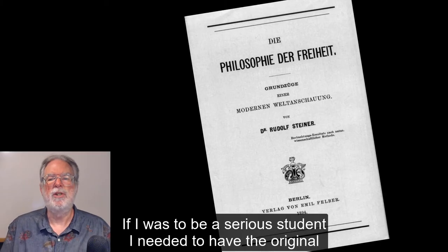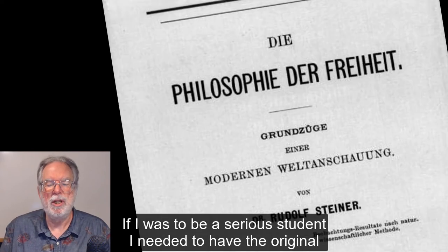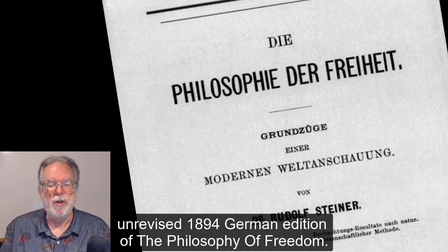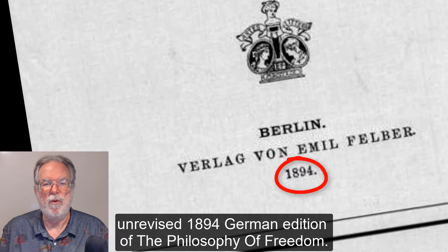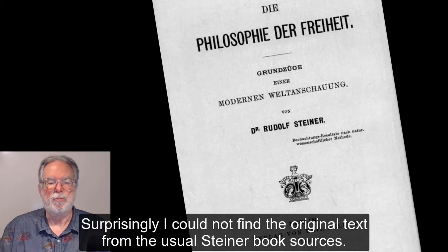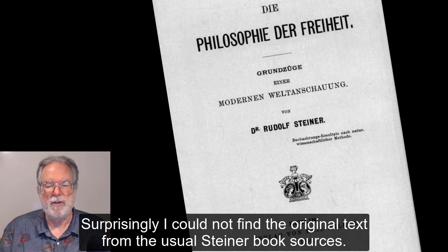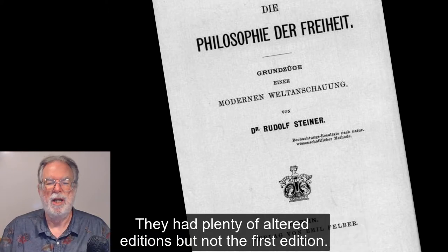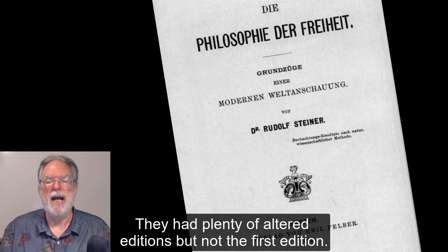If I was to be a serious student, I needed to have the original, unrevised, 1894 German edition of the Philosophy of Freedom. Surprisingly, I could not find the original text from the usual Steiner book sources. They had plenty of altered editions, but not the first edition.